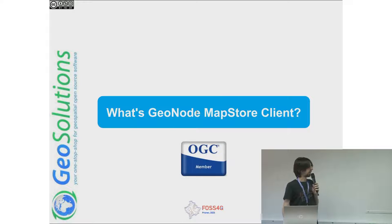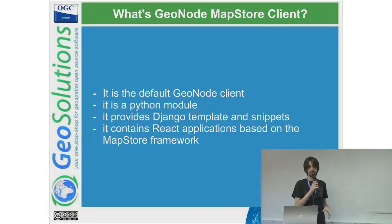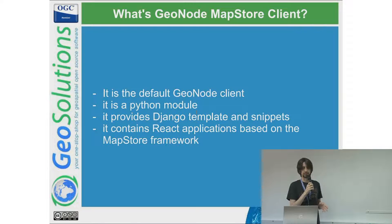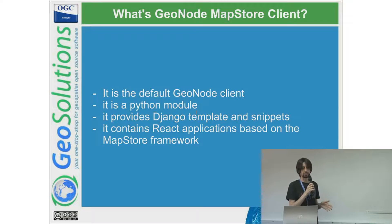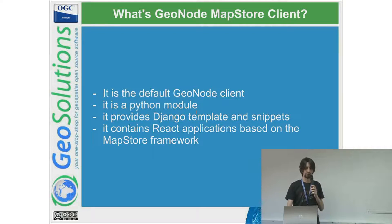The GeoNode-MapStore client is the default GeoNode client. When you install GeoNode you receive this module because it's in GeoNode's requirements. It is a Python module that provides template snippets which override the core ones. Some pages are still in the core of GeoNode and we are working to remove those, because the new GeoNode 4 focuses on the API v2, so we want the client-server integration to work through the API only. It also contains the React applications built on top of the MapStore framework.